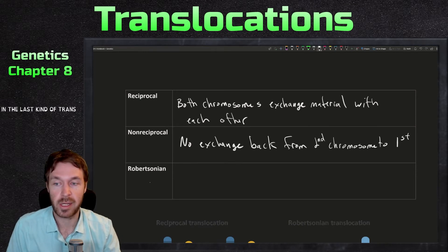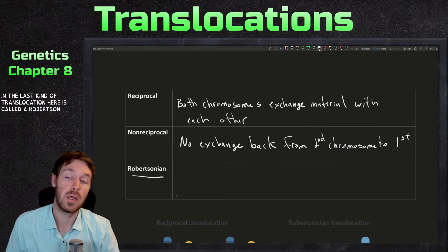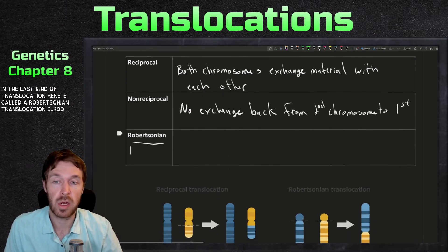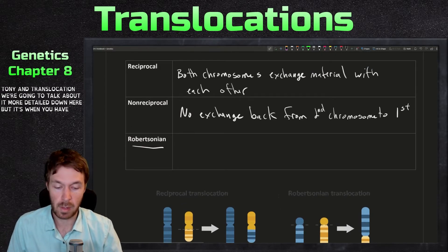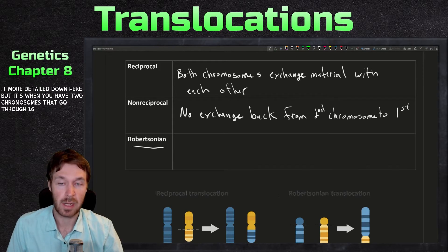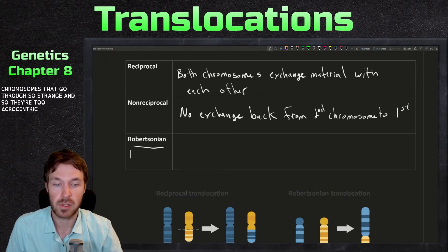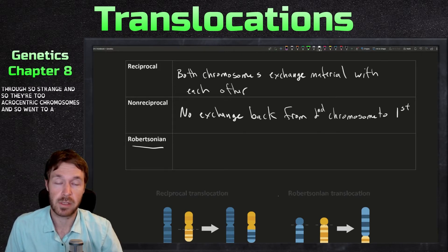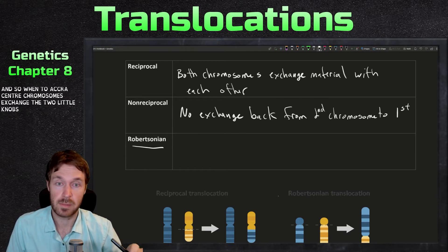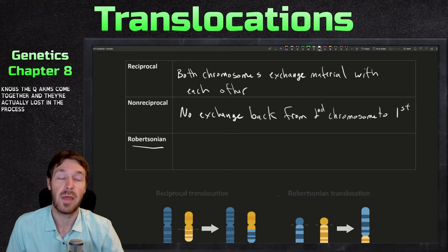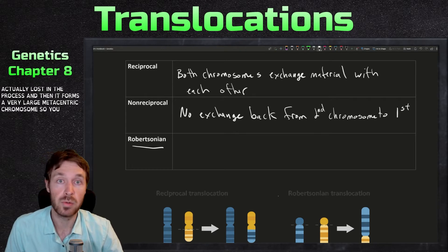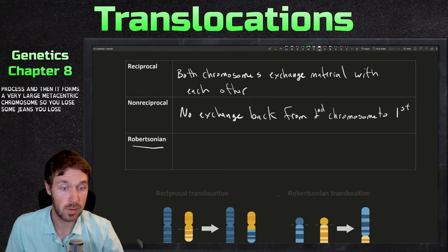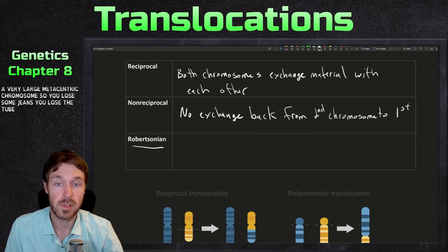And the last kind of translocation here is called a Robertsonian translocation. Now Robertsonian translocation, we're going to talk about it in more detail down here, but it's when you have two acrocentric chromosomes that go through this exchange. And so when two acrocentric chromosomes exchange, the two little knobs, the Q arms come together and they're actually lost in the process. And then it forms a very large metacentric chromosome. So you lose some genes, you lose the two knobs in the process.